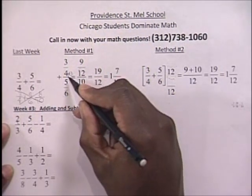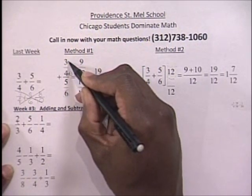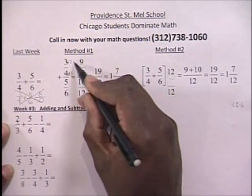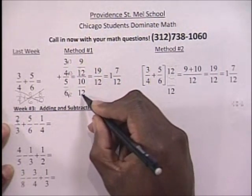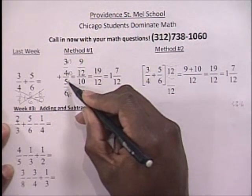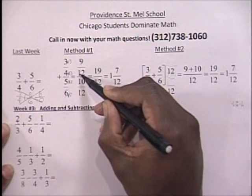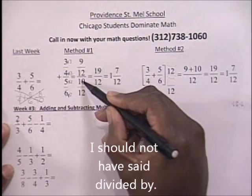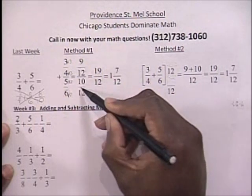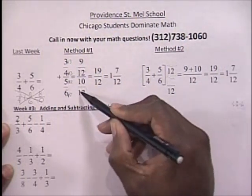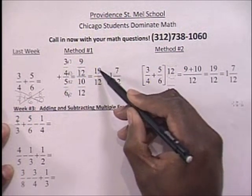You multiply this 4 by 3 to get 12, and you have to multiply this 3 by 3 to get 9. You have to multiply this 6 by 2 to get 12, and therefore multiply this 5 by 2 to get 10. That gave you 9 twelfths plus 10 twelfths. And now that you have a common denominator, you can just add 9 plus 10 to get 19.